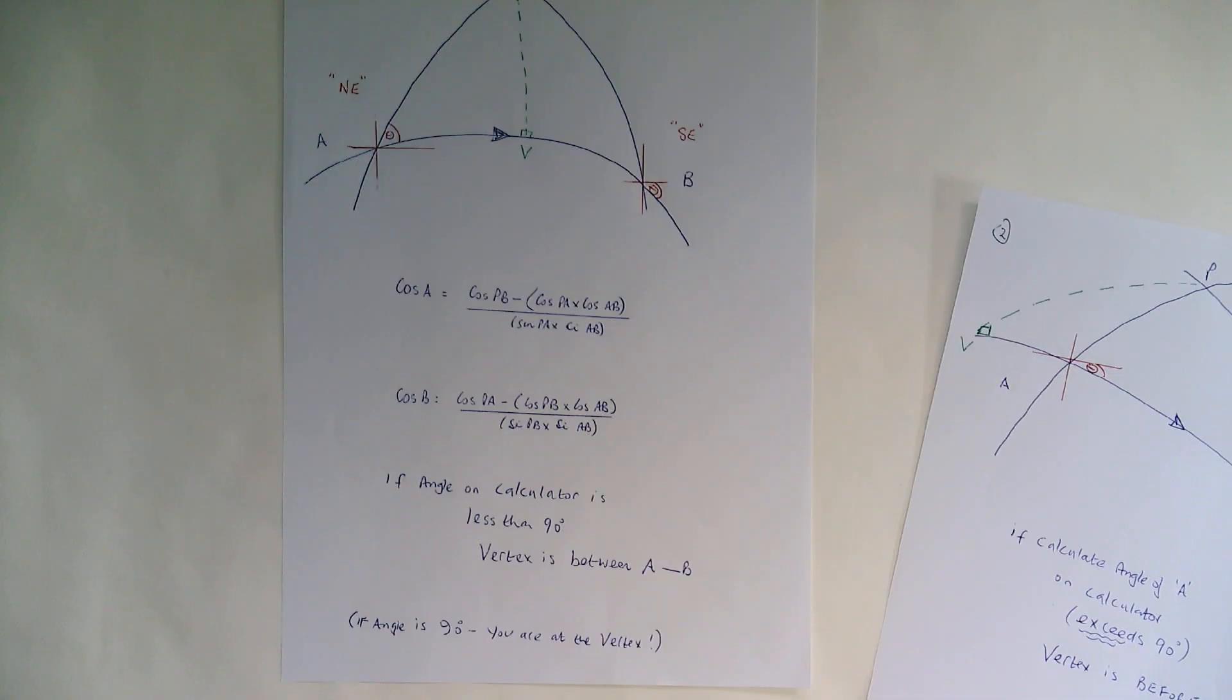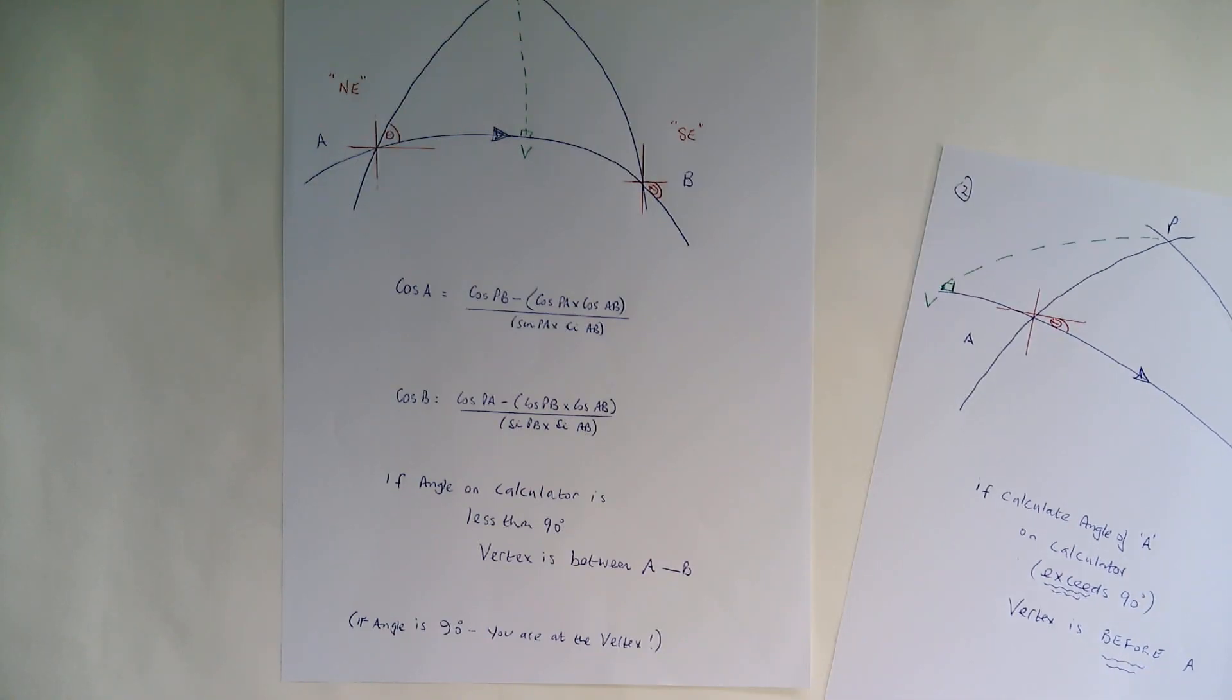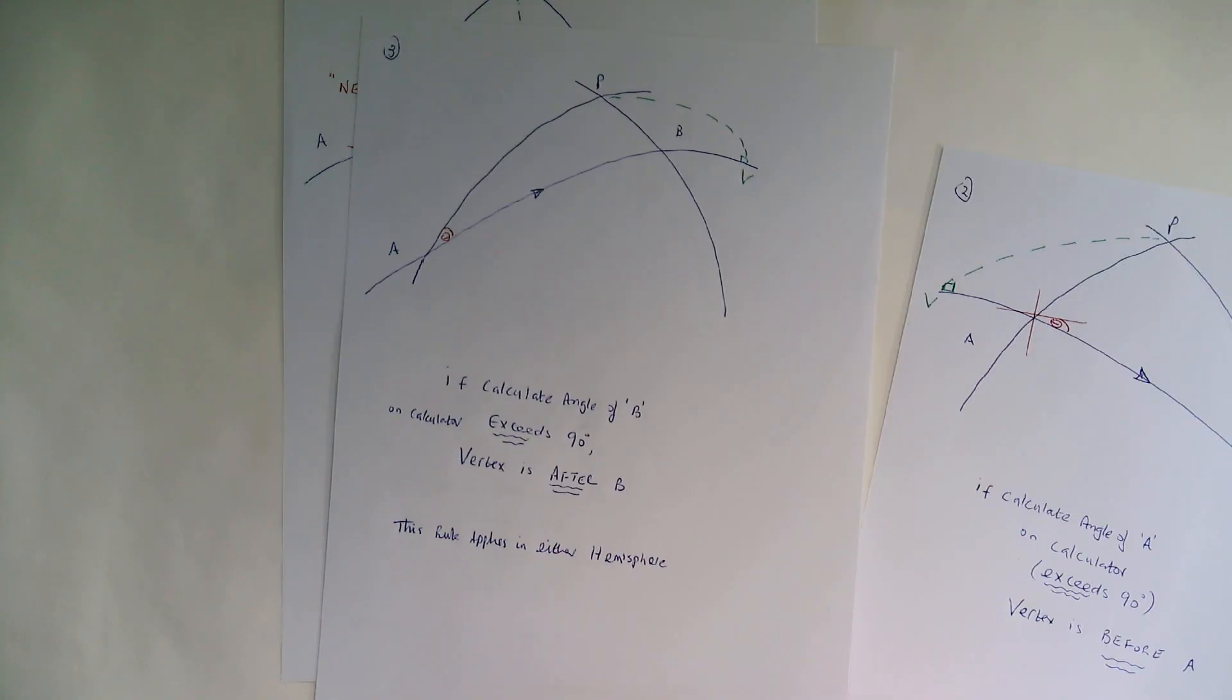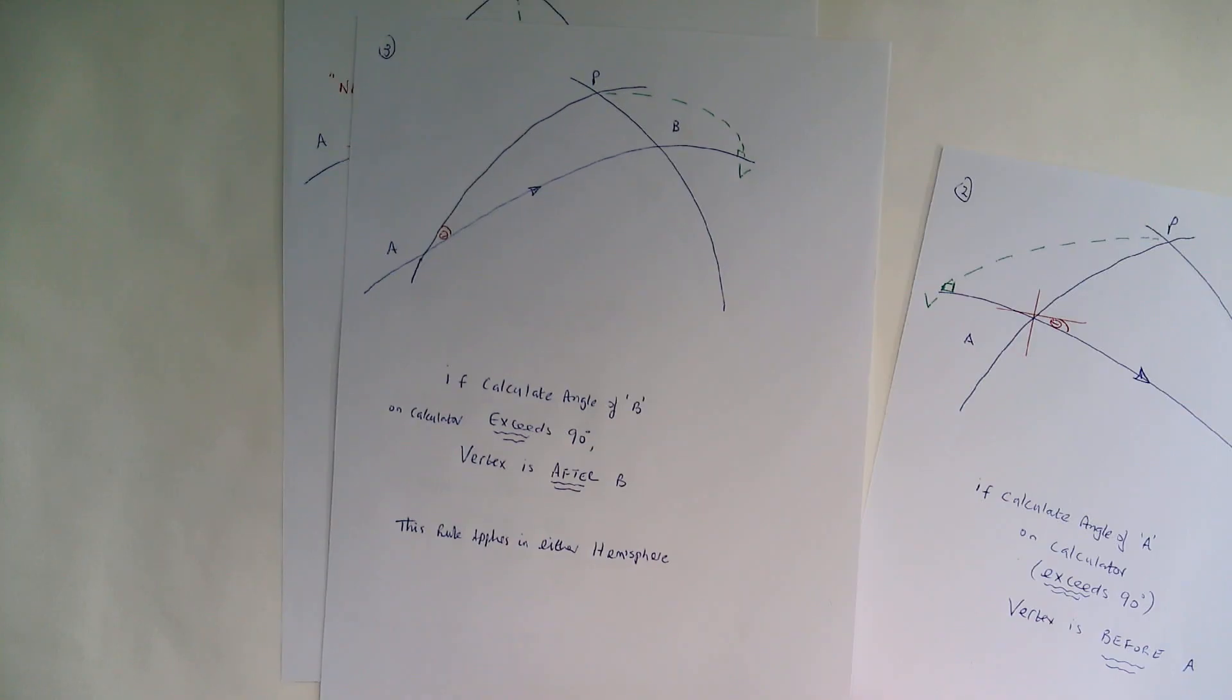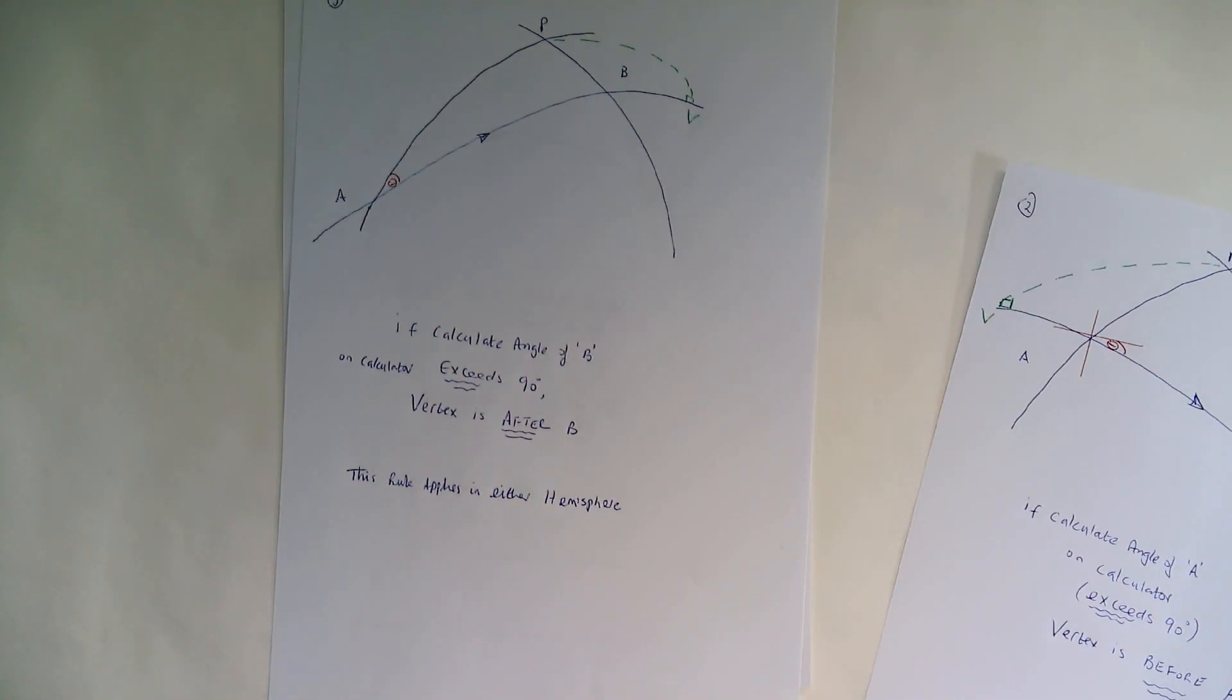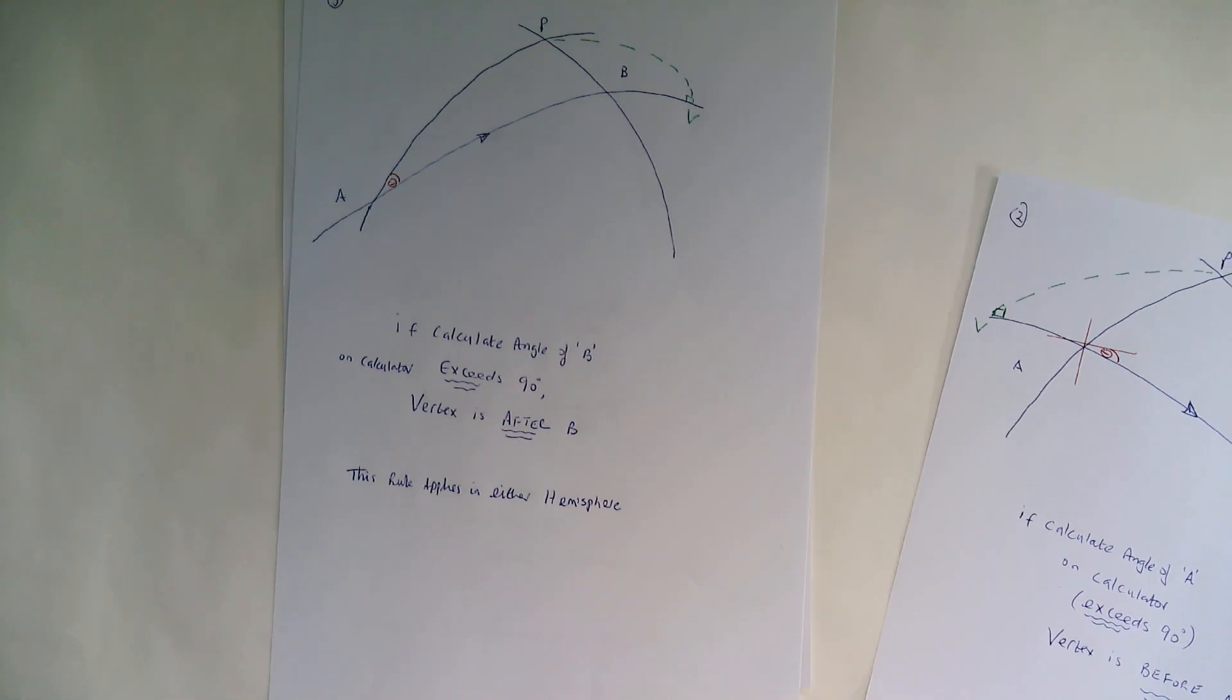Because the course you're actually going, final course, would actually be northeast. So this rule applies whether you're going northern or southern hemisphere. Just follow that simple rule, whether the calculator value is less than 90 or more than 90.